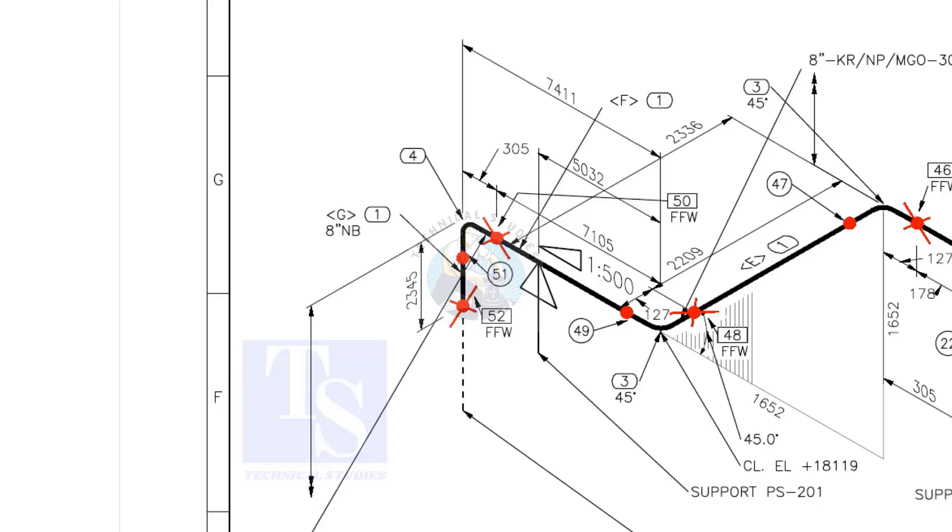As per the drawing, the length of this pipe is 7105 mm. But, we will fabricate a minimum length of a 7205 mm pipe.